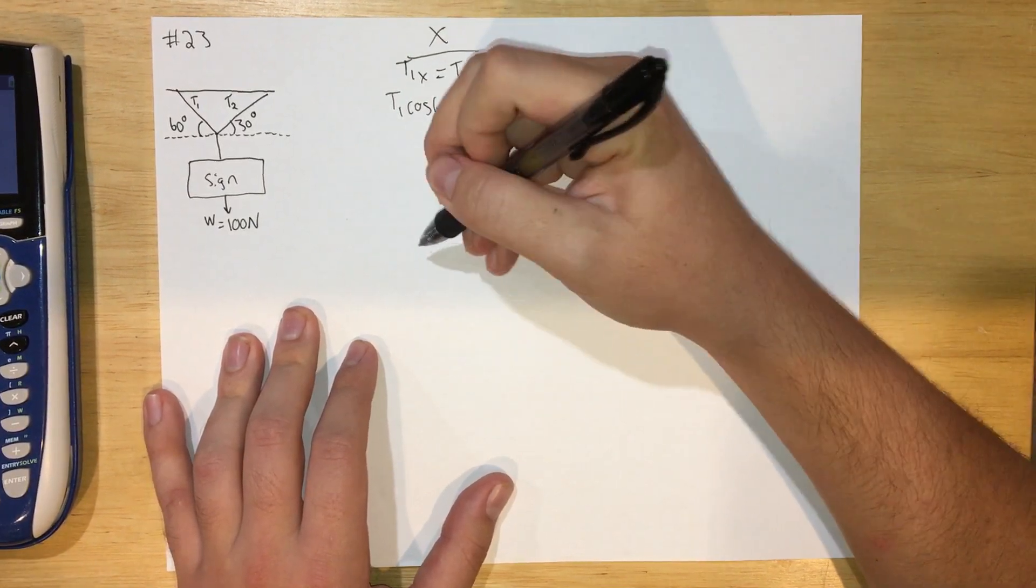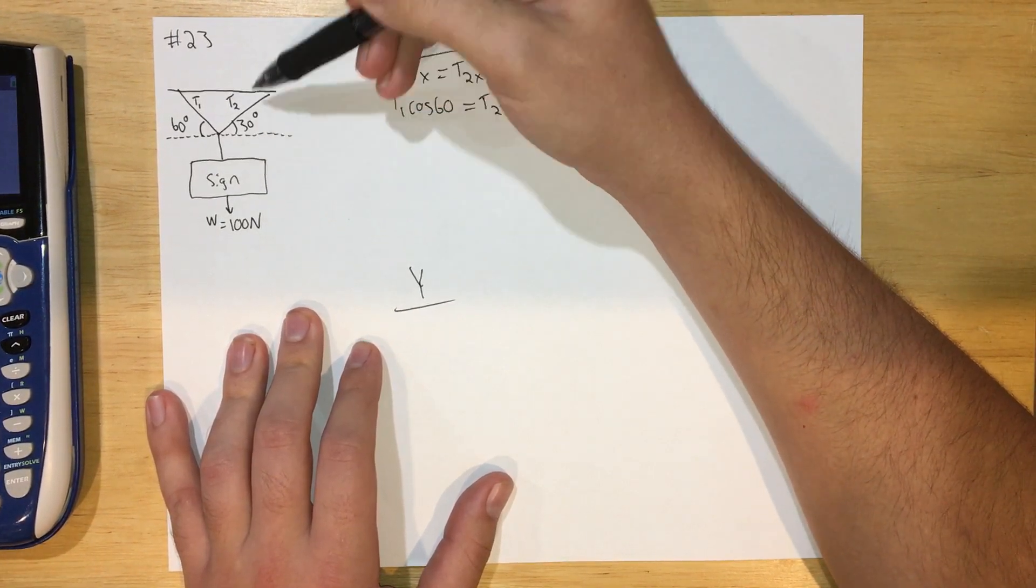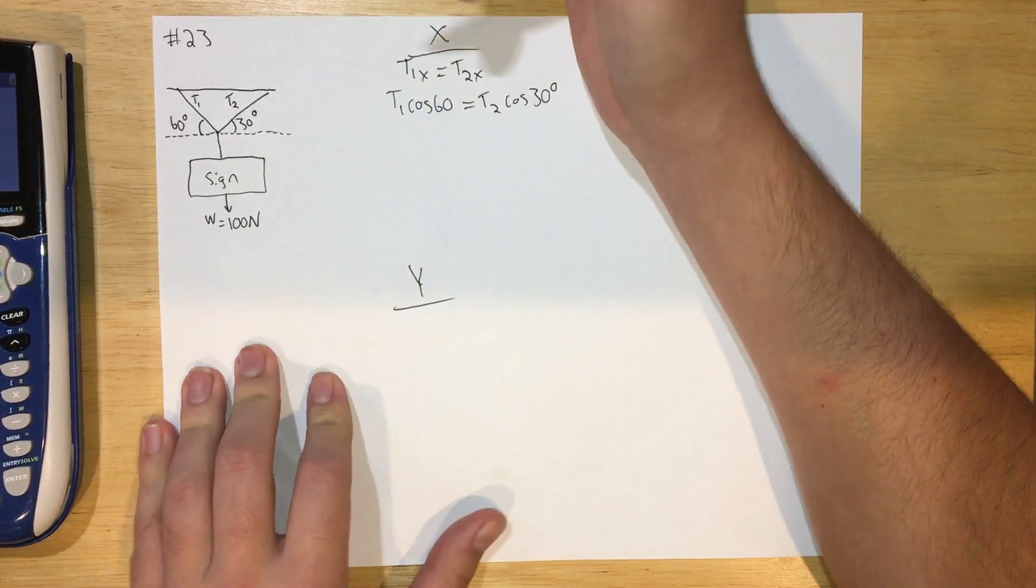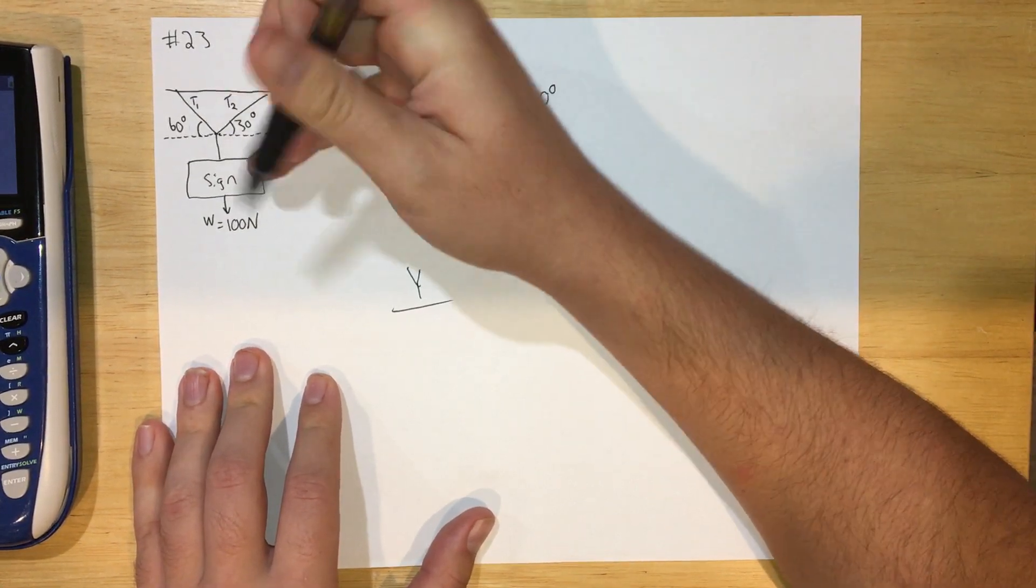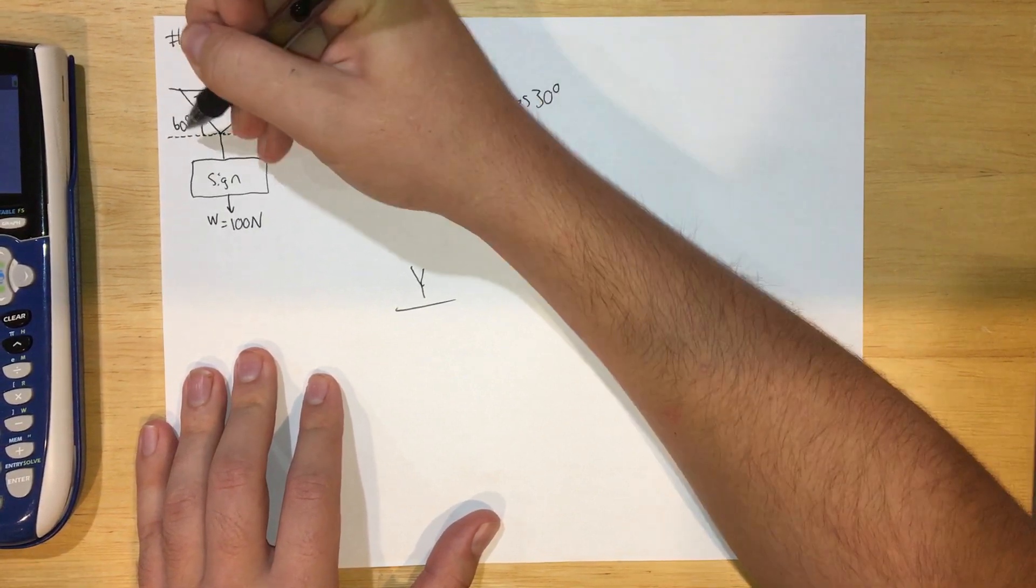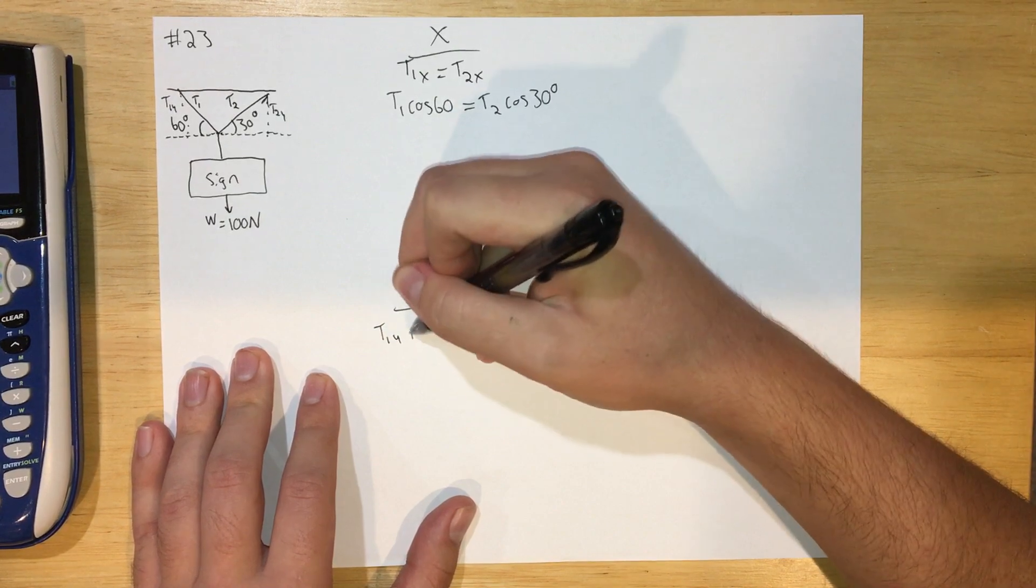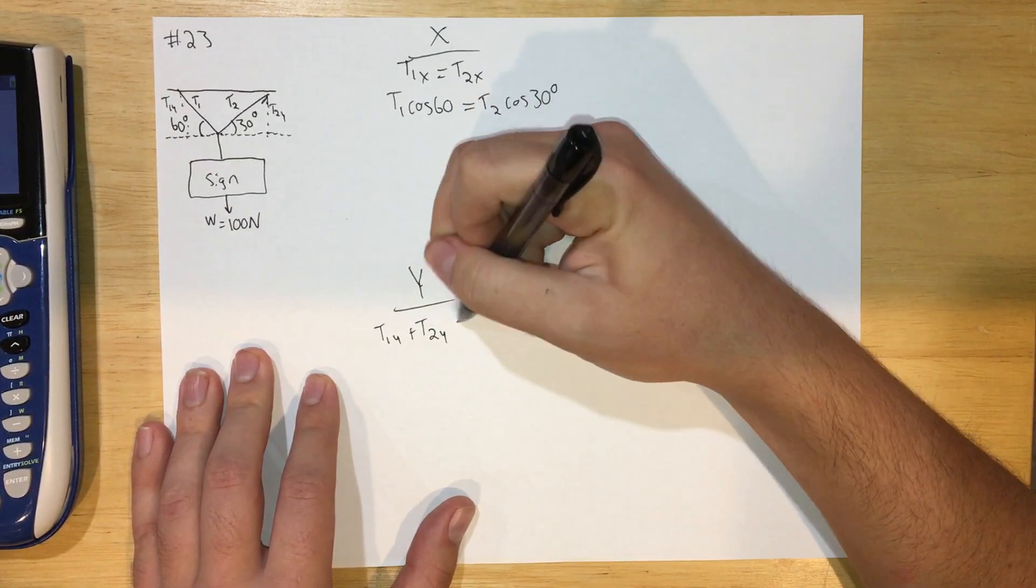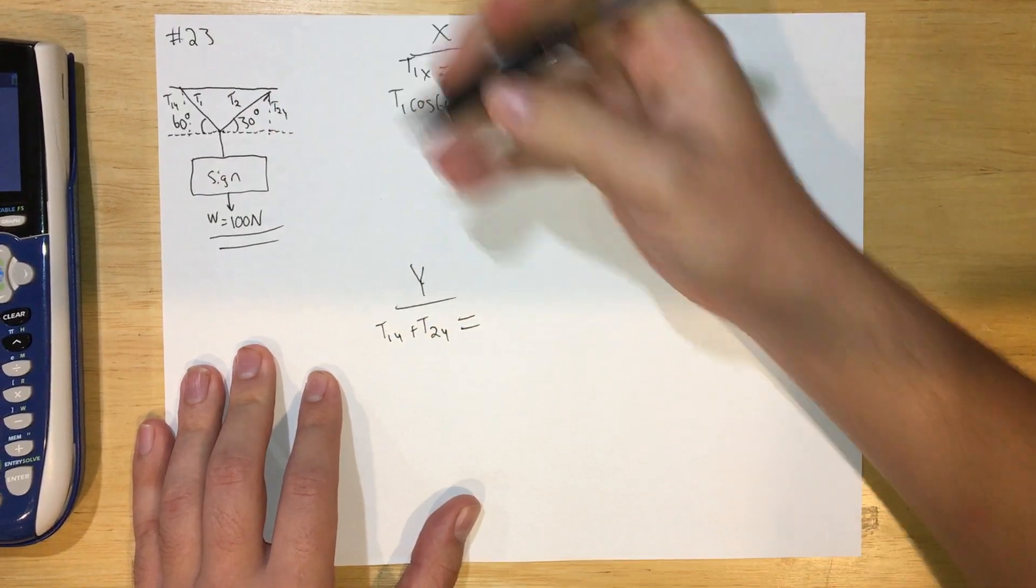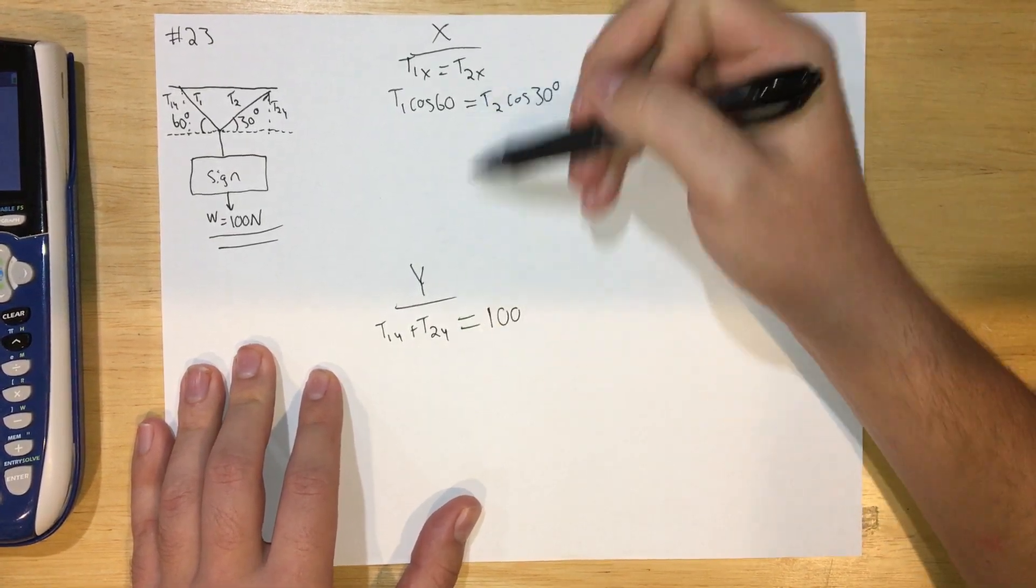So let's look in the Y direction. Same scenario—the sign is not accelerating up or down, it's in equilibrium. So the forces going up are going to balance the forces going down. So going up we have these two ropes pulling the sign up. We have the Y component of T2 pulling up and we have the Y component of T1 pulling up. So T1y plus T2y, and then what's pulling down—the weight of the sign is pulling down, and that's given to us as 100 newtons. So I can just write 100 newtons in here.